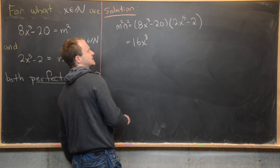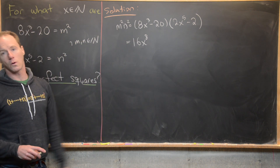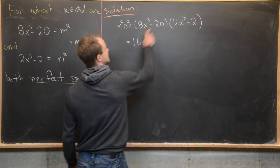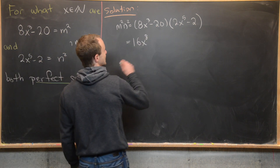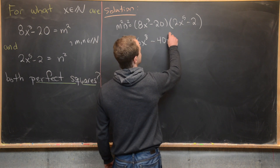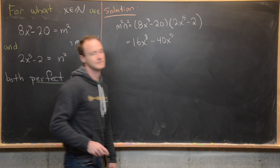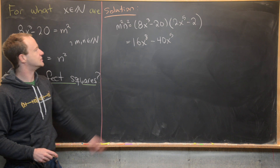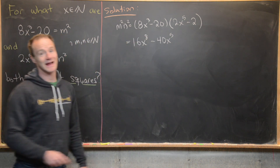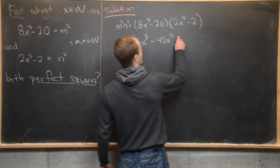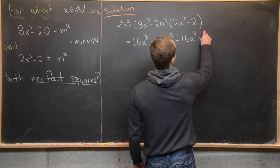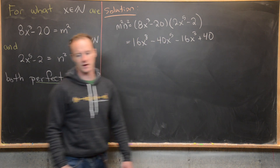Continuing in decreasing order of exponents: 2x⁵ times negative 20 gives minus 40x⁵, then 8x³ times negative 2 gives minus 16x³, and finally plus 40. So m²n² = 16x⁸ − 40x⁵ − 16x³ + 40.